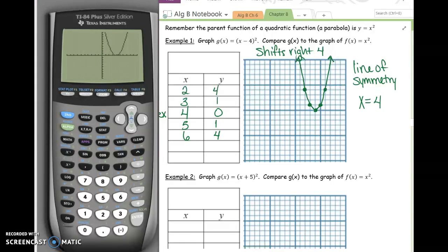In example 1, it said minus 4, and it shifted to the right 4 units. So now in example 2, it says plus 5. What do you think is going to happen when it says plus 5?